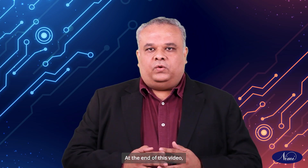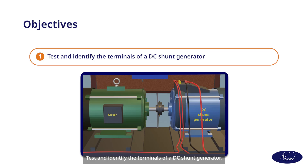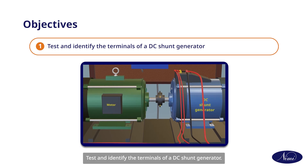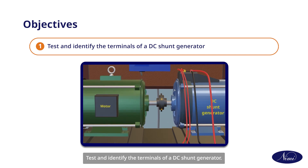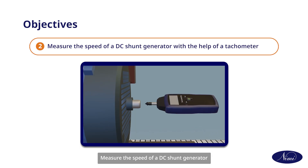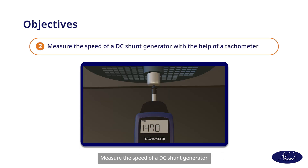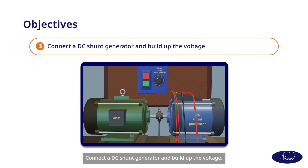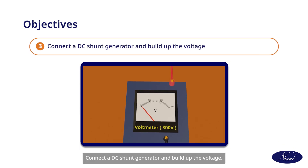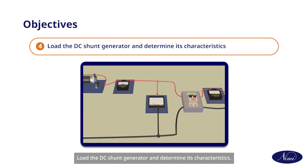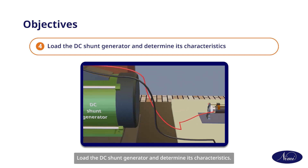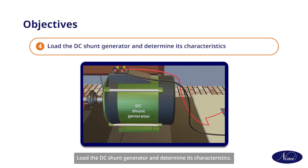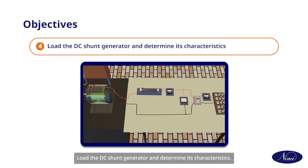At the end of this video, you will be able to test and identify the terminals of a DC shunt generator, measure the speed of a DC shunt generator with the help of a tachometer, connect a DC shunt generator and build up the voltage, and load the DC shunt generator and determine its characteristics.